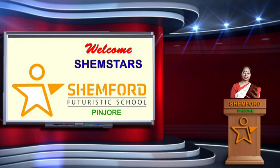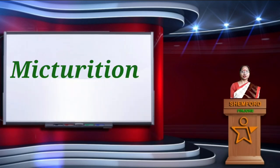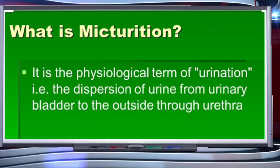Good morning. In the previous presentation of Chapter 19, Excretory Products and Their Elimination, we discussed the counter current mechanism. In this presentation, we will be discussing micturition, the role of other organs in excretion, and disorders of the excretory system. Micturition is the physiological term for urination — the expulsion of urine from the urinary bladder to the outside through the urethra.